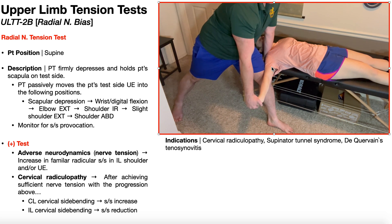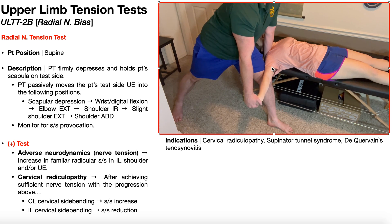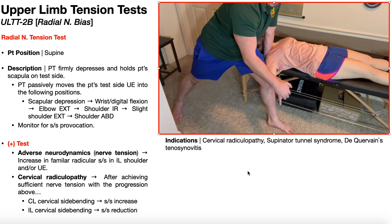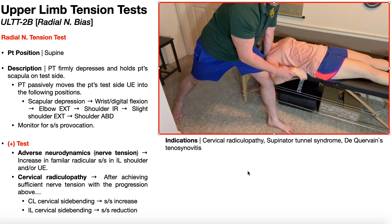Once she has sufficient tension in the nerve, contralateral side bending — bending away from the test side — should increase symptoms if it's a cervical radiculopathy. And bending toward the test side should reduce symptoms if it's a cervical radiculopathy.